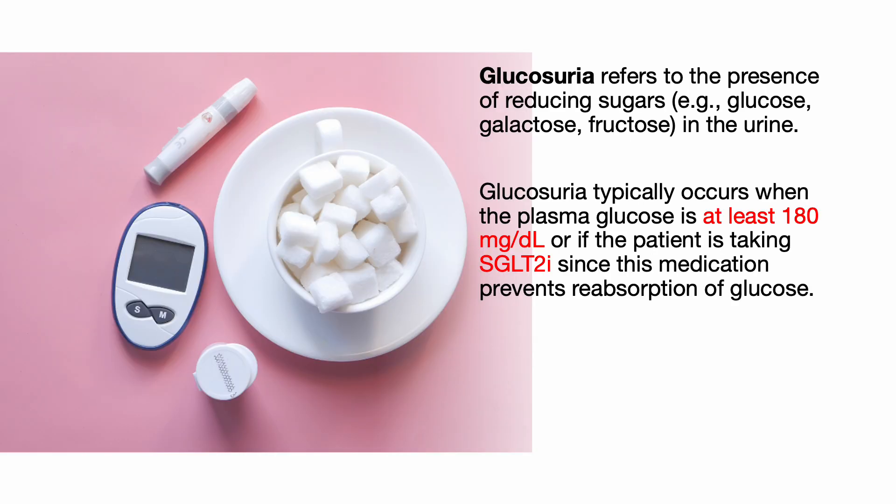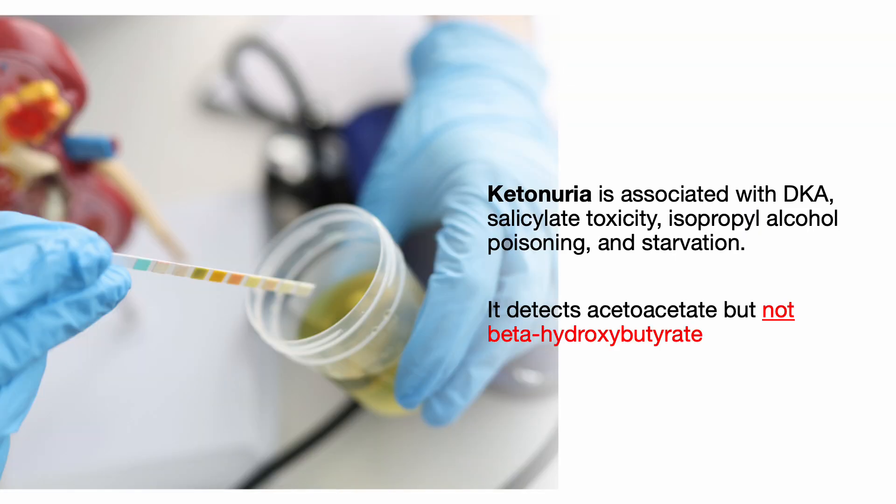Glucosuria refers to the presence of reducing sugars such as glucose, galactose, and fructose in the urine. Glucosuria typically occurs when the plasma glucose is at least 180, or if the patient is taking an SGLT2 inhibitor like empagliflozin, since this medication prevents reabsorption of glucose. Ketonuria is associated with diabetic ketoacidosis, salicylate toxicity, isopropyl alcohol poisoning, and starvation. It detects acetoacetate but not beta-hydroxybutyrate.